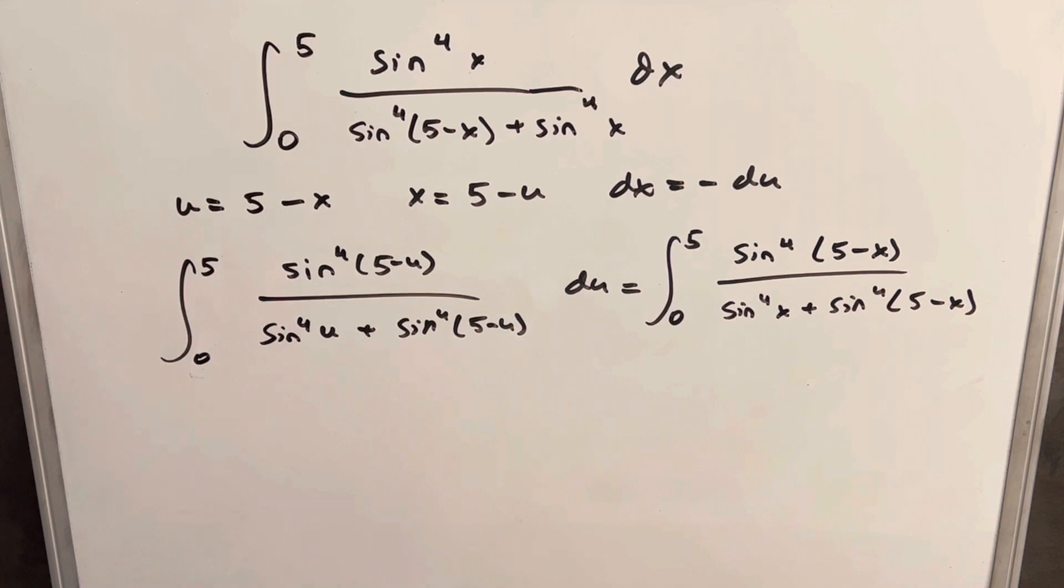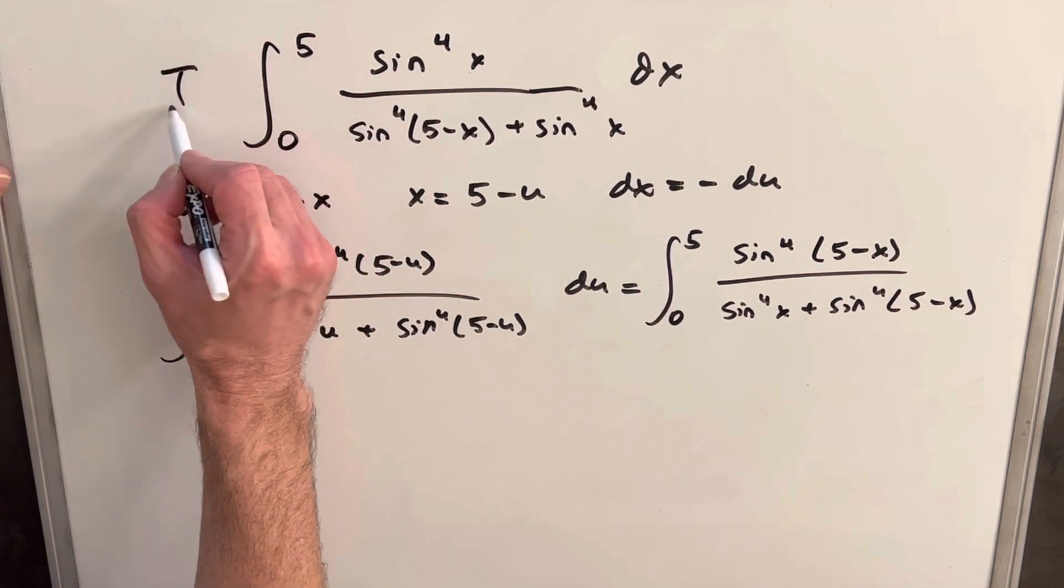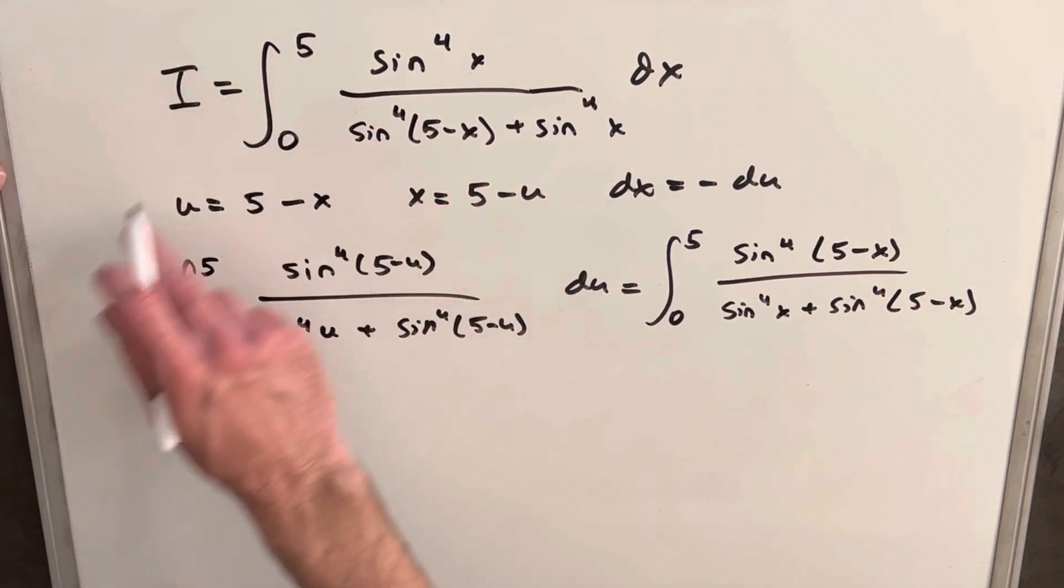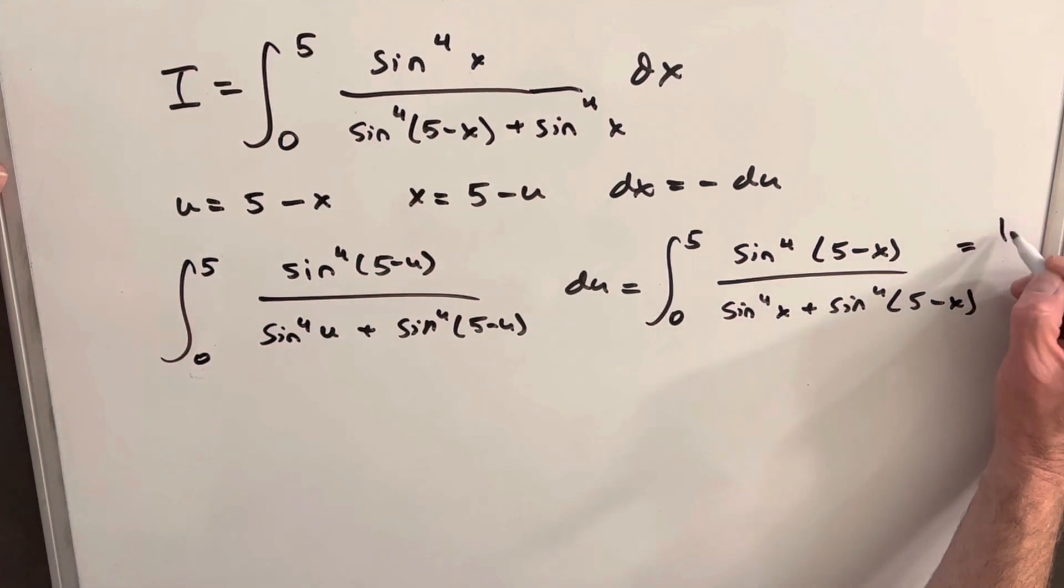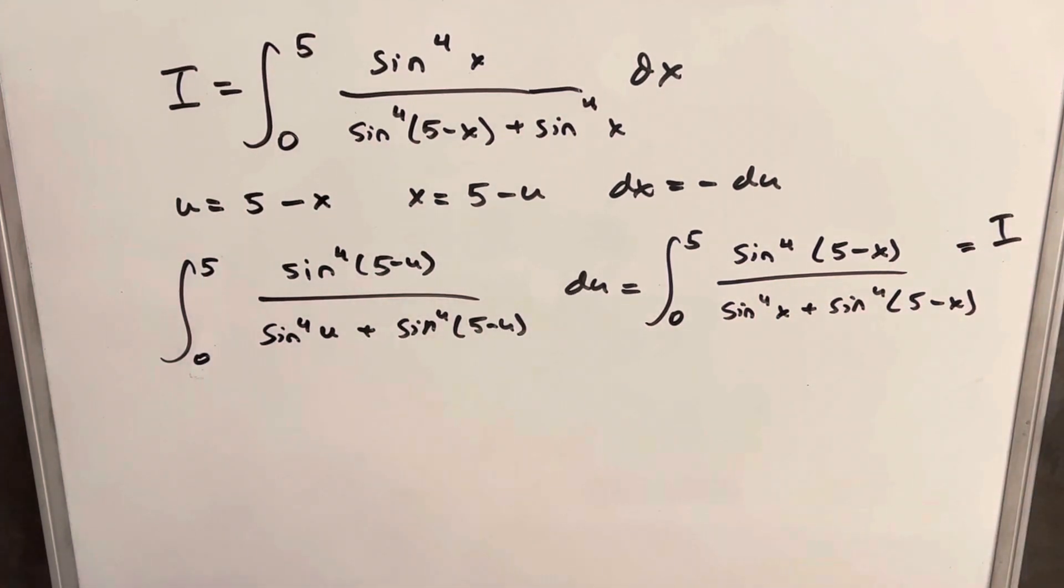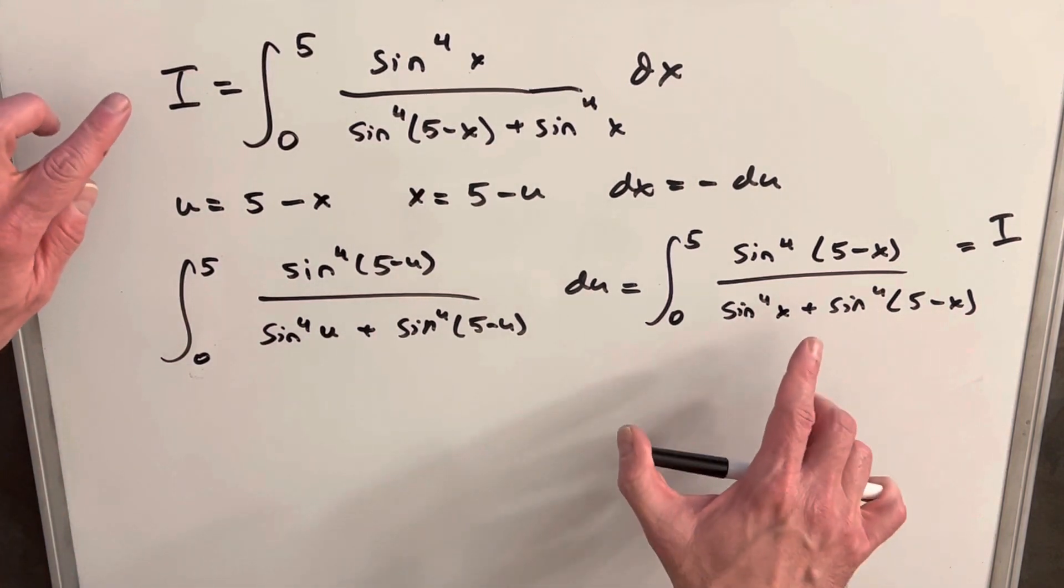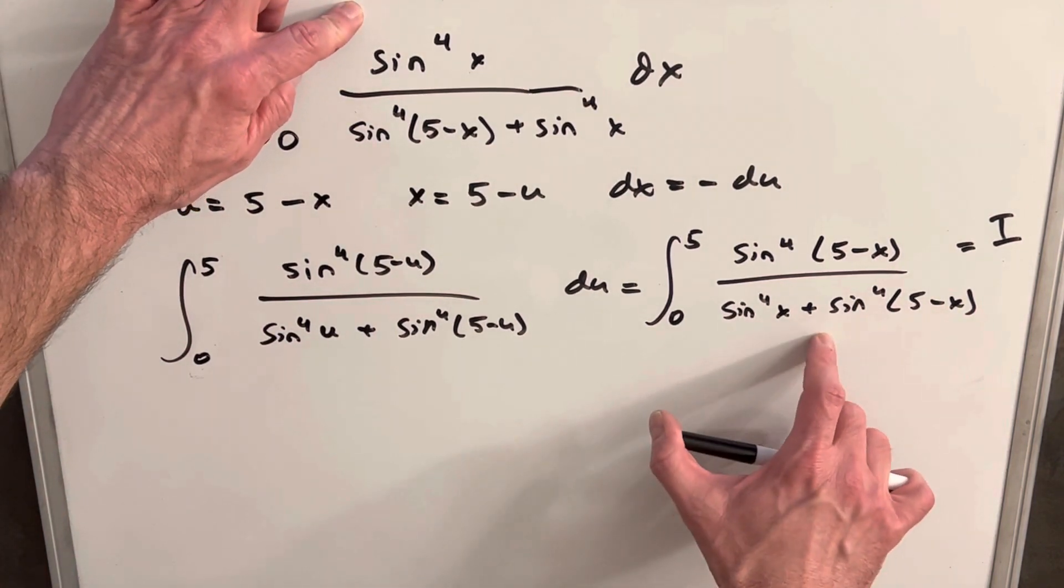And then what we can do is just kind of to keep track, this is our original integral that we'll call i, but then we just manipulated it, and then this is also i, because these are all equal. So from here, what I want to do, I want to add these two together. So we'll add the integral together, but we're just going to use our original copy and this adjusted copy.